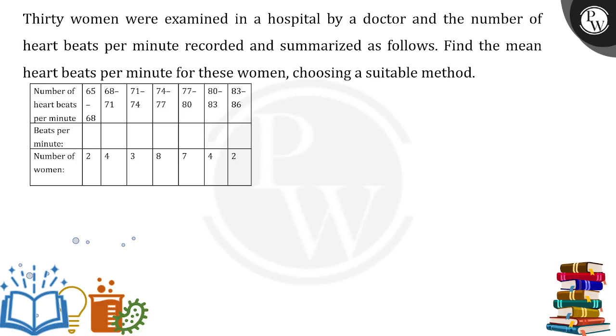30 women were examined in the hospital by the doctor and the number of heartbeats per minute recorded and summarized as follows. So you can see the number of heartbeats. So between 65 to 68 there were 2 women, 68 to 71, 4 women and so on. The data is given. Find the mean heartbeat per minute for those women choosing a suitable method.